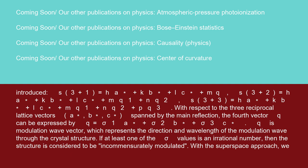With respect to the three reciprocal lattice vectors a*, b*, c* spanned by the main reflection, the fourth vector Q can be expressed by Q = σ₁·a* + σ₂·b* + σ₃·c*.